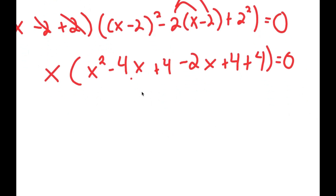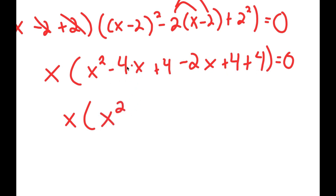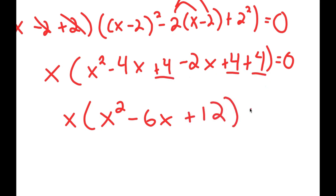From here, we can simplify what's in the parentheses. So I get x times (x squared minus 4x plus 4 minus 2x plus 4 plus 4). This simplifies to x squared; negative 4x minus 2x is negative 6x; and 4 plus 4 plus 4 is plus 12. This is equal to 0.